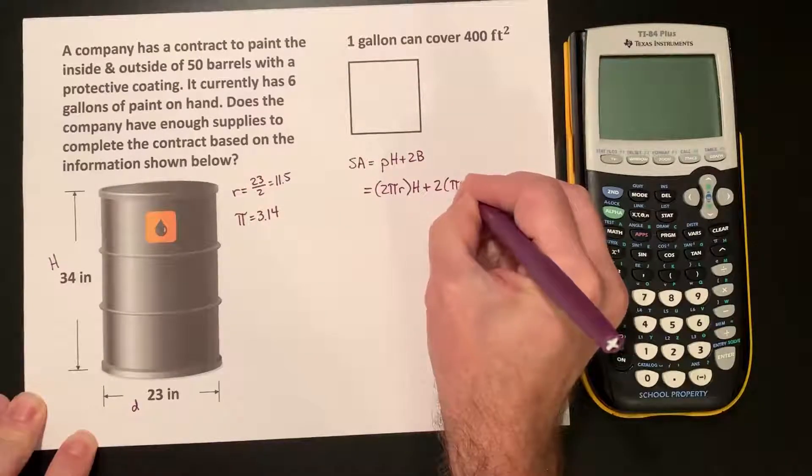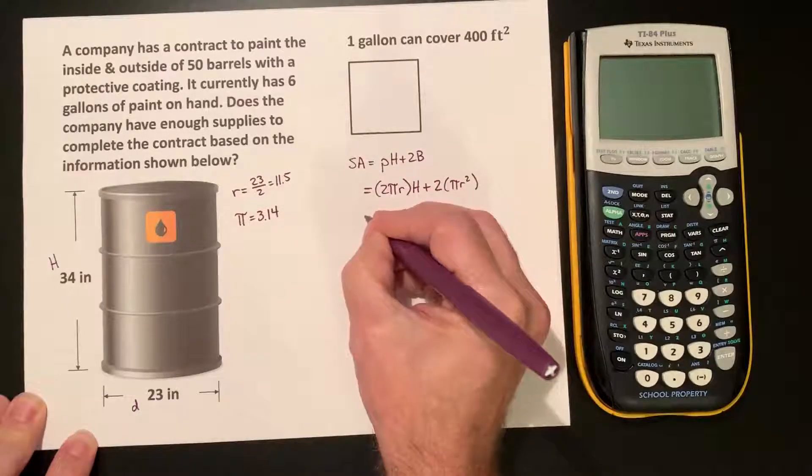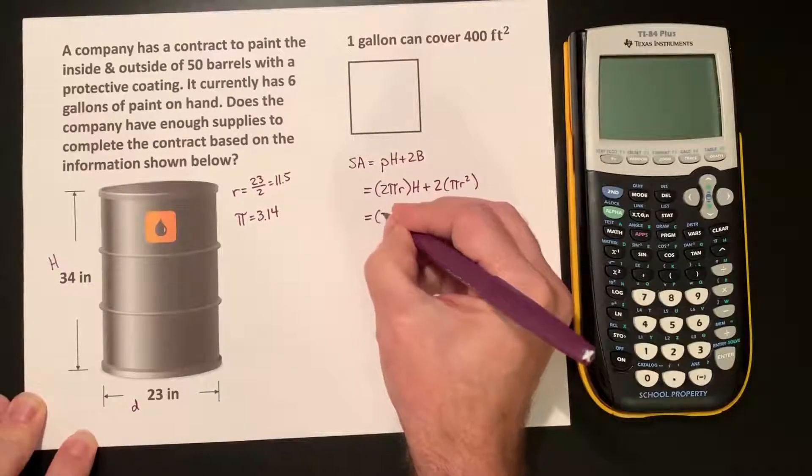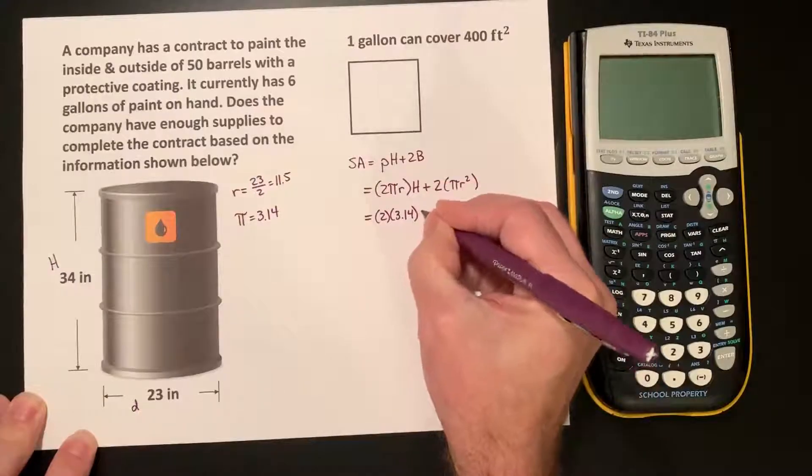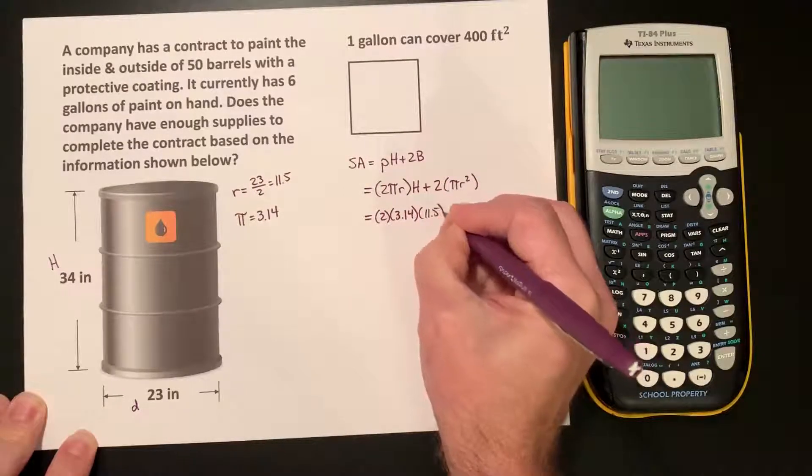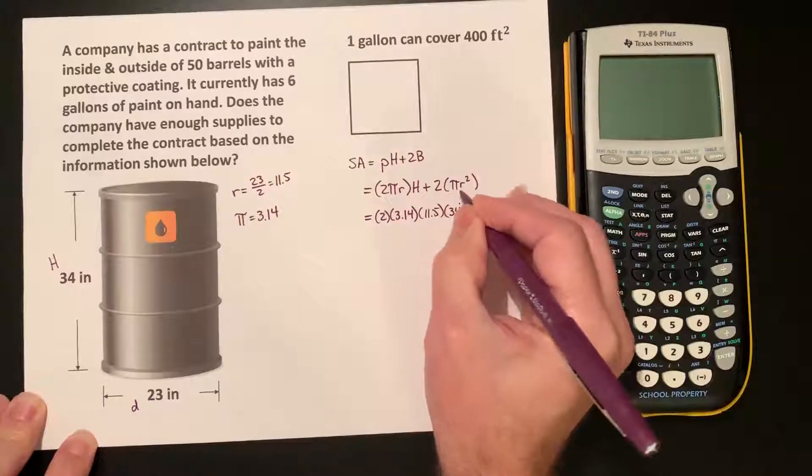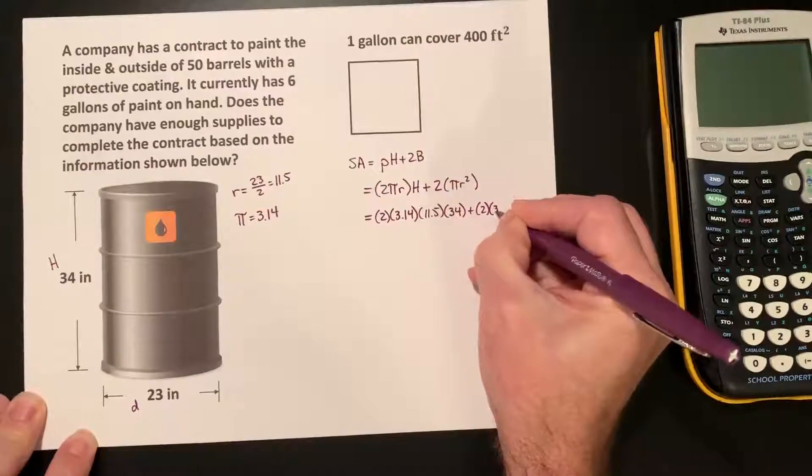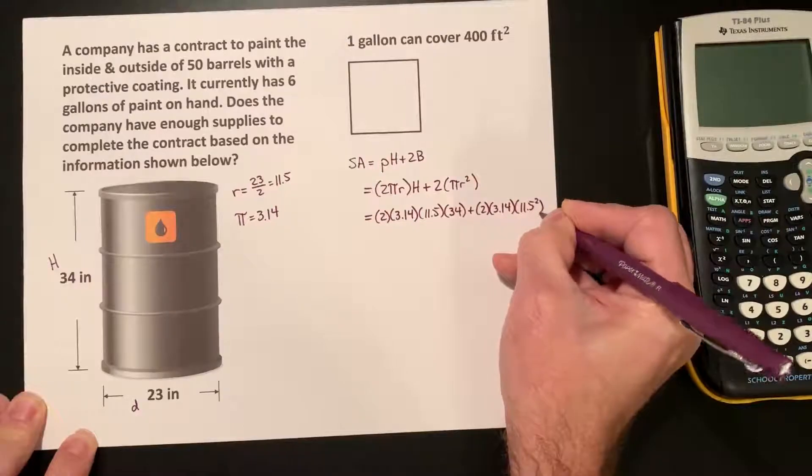If we substitute in the values that we know, we have 2 times 3.14 times 11.5 times 34, plus 2 times 3.14 times 11.5 squared.